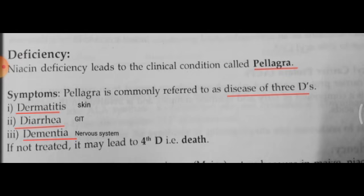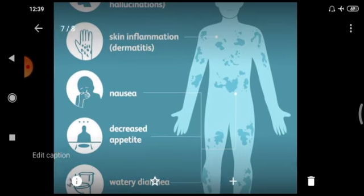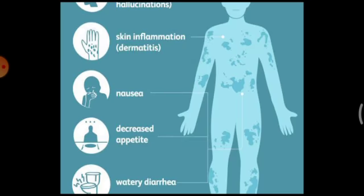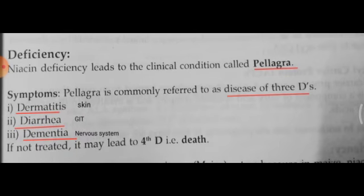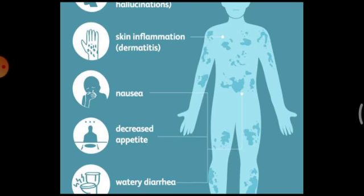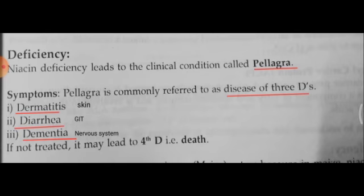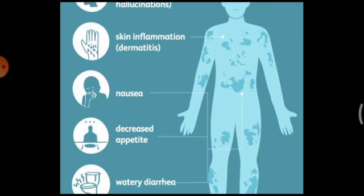Now we are going to continue. Niacin deficiency causing pellagra affects the skin, gastrointestinal tract and nervous system. The skin shows dermatitis, the gastrointestinal problems include nausea, decreased appetite and watery diarrhea, whereas in the nervous system you can see hallucinations. So this is the illustration of pellagra affecting the skin, gastrointestinal tract and nervous system.